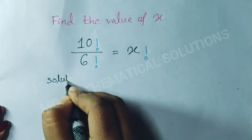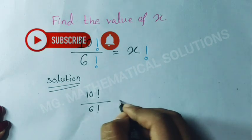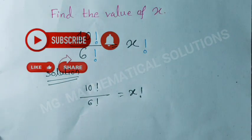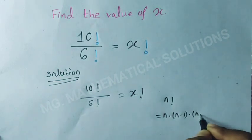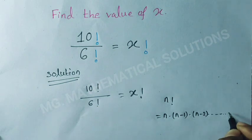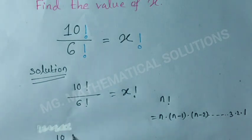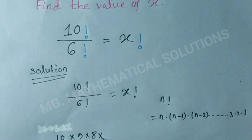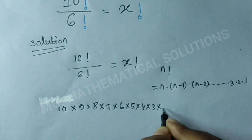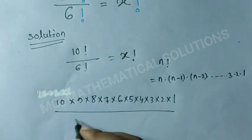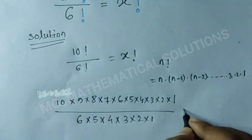Let's see the solution. 10 factorial by 6 factorial equals x factorial. The formula of n factorial equals n times n minus 1 times n minus 2 times 3 times 2 times 1. Here n means 10. So, 10 times 9 times 8 times 7 times 6 times 5 times 4 times 3 times 2 times 1 by 6 times 5 times 4 times 3 times 2 times 1 equals x factorial.